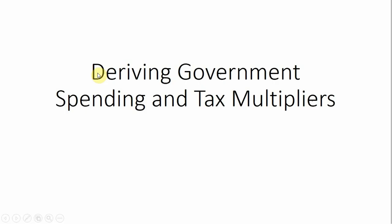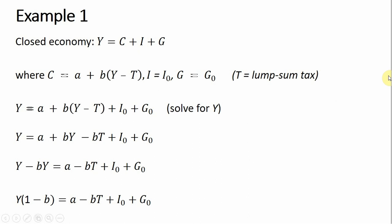In this video, we're going to look at deriving government spending and tax multipliers. We have a closed economy in example one — there'll be two examples in this video. In example one, we have a closed economy where income, GDP, equals consumption plus investment spending plus government purchases.